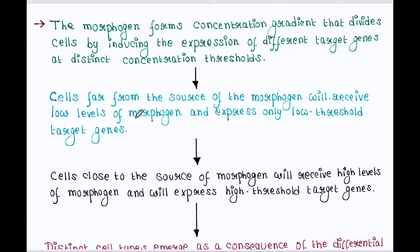Cells far away from the source of the morphogen will receive low levels of morphogen and express only low threshold target genes. Cells close to the source will receive high levels of morphogen and will express high threshold target genes.